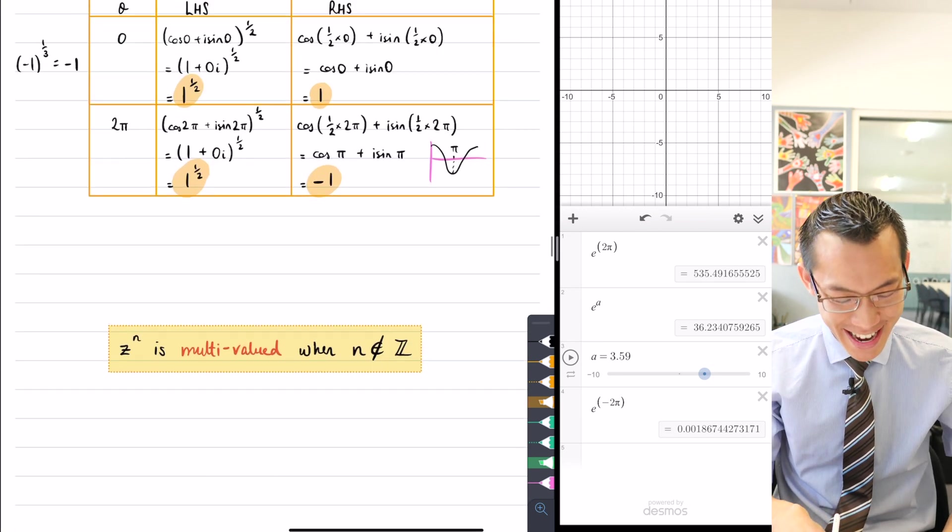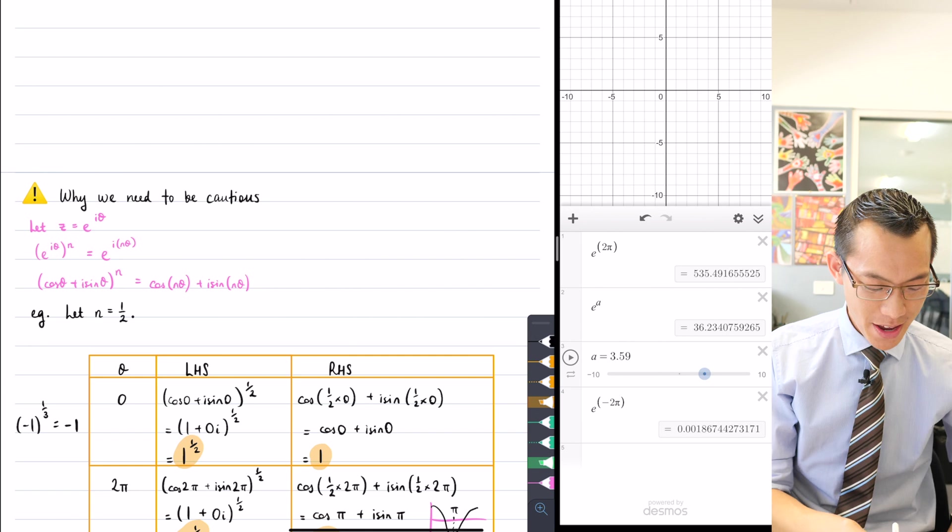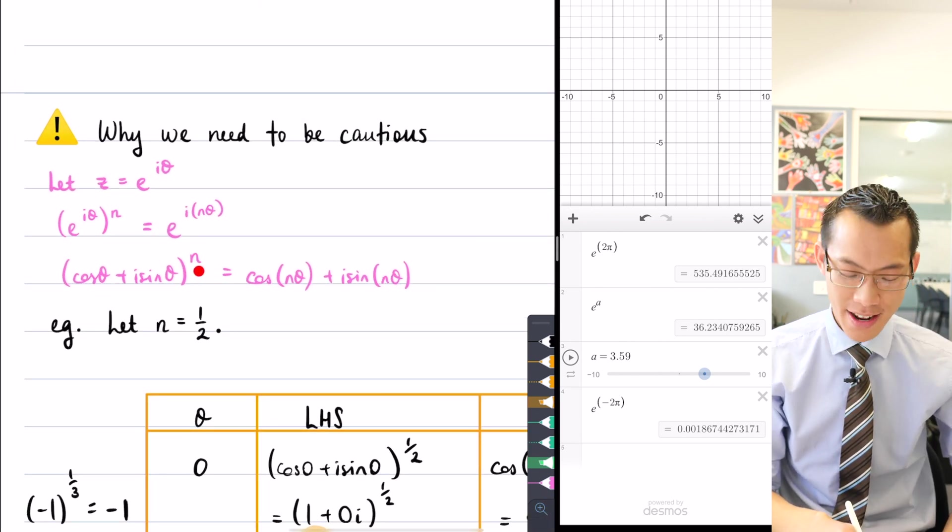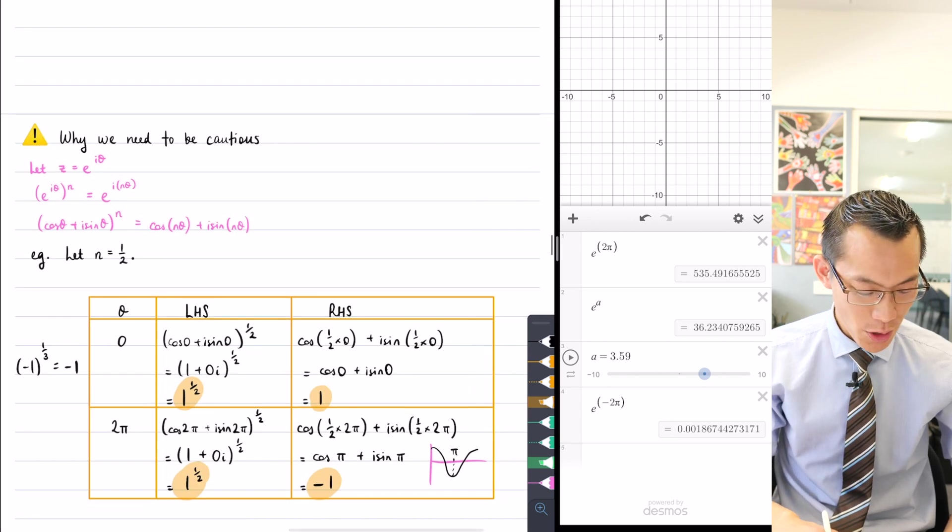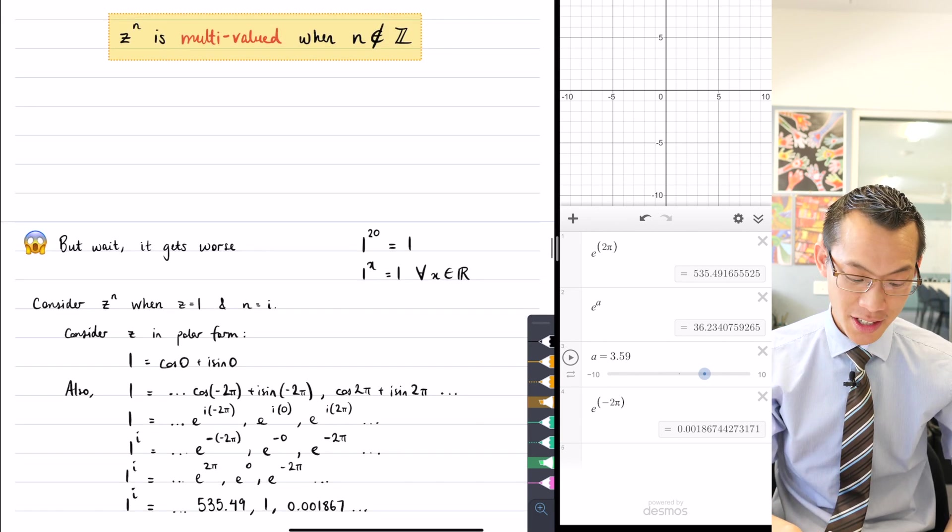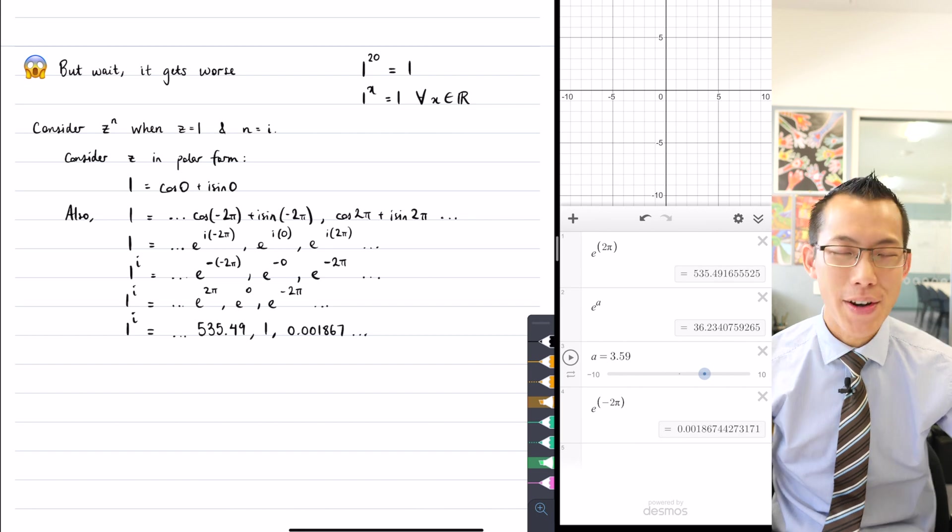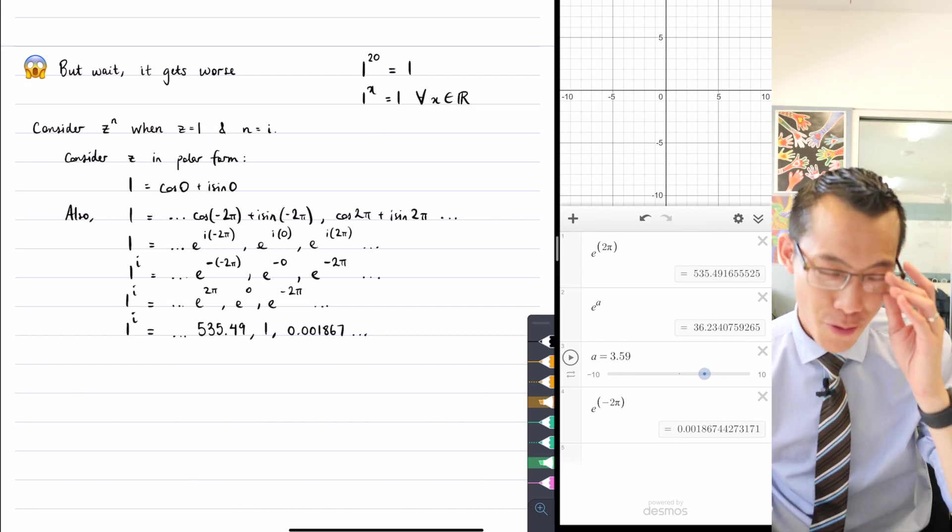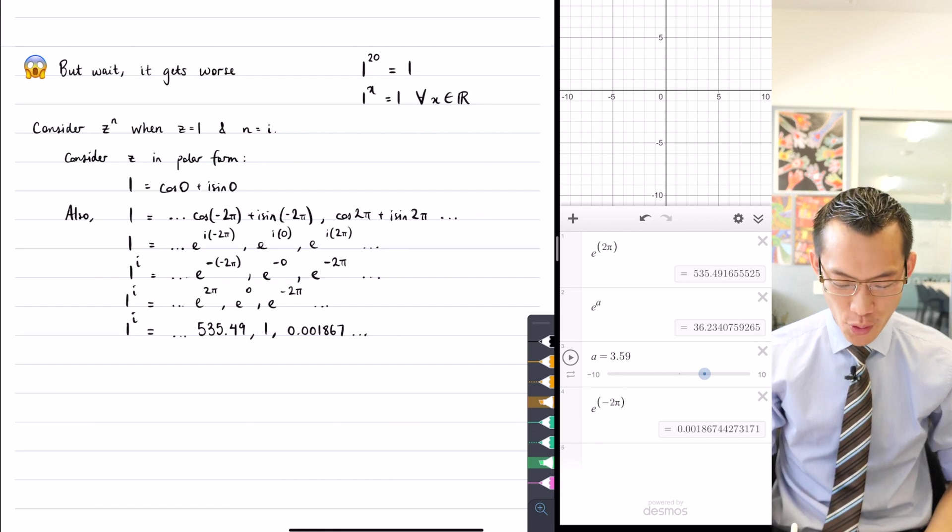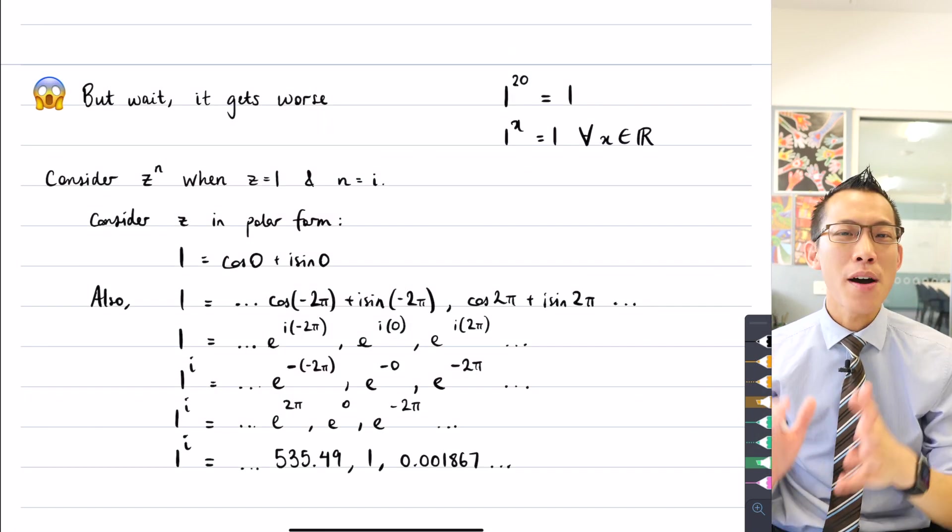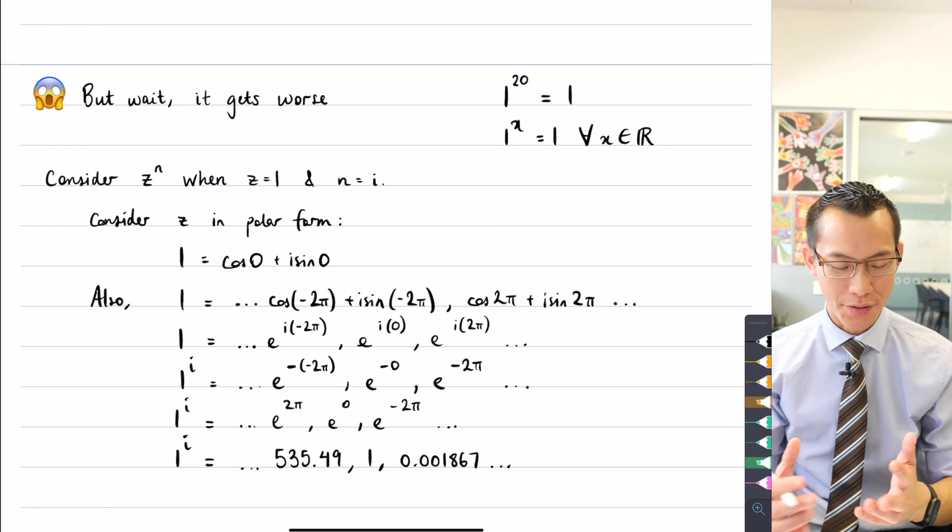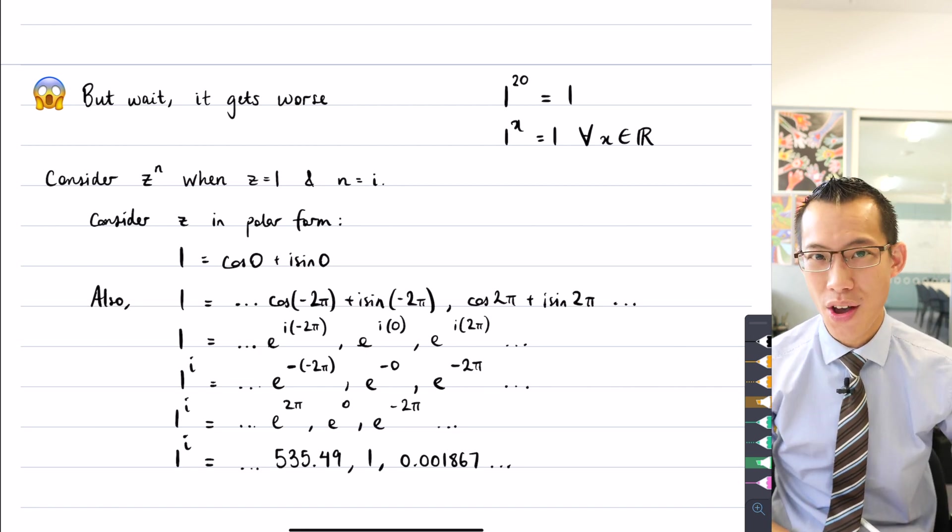We were trying to say right at the beginning that De Moivre's theorem gives us this nice relationship here, raised to the power of n equals this. But we've seen with non-integer values, especially with complex values, you run into some serious problems. So take a breath for a moment, what can we conclude? And before we move on, De Moivre's theorem only works for, is only valid for integer values of n.